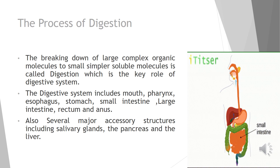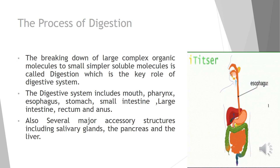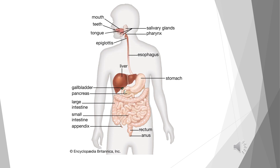When you talk about the digestive system, there are some main parts involved: the mouth, pharynx, esophagus, stomach, small intestine, large intestine, rectum, and anus. Other than that, there are some major accessory structures which help the digestion process — they include the salivary glands, the pancreas, and the liver.